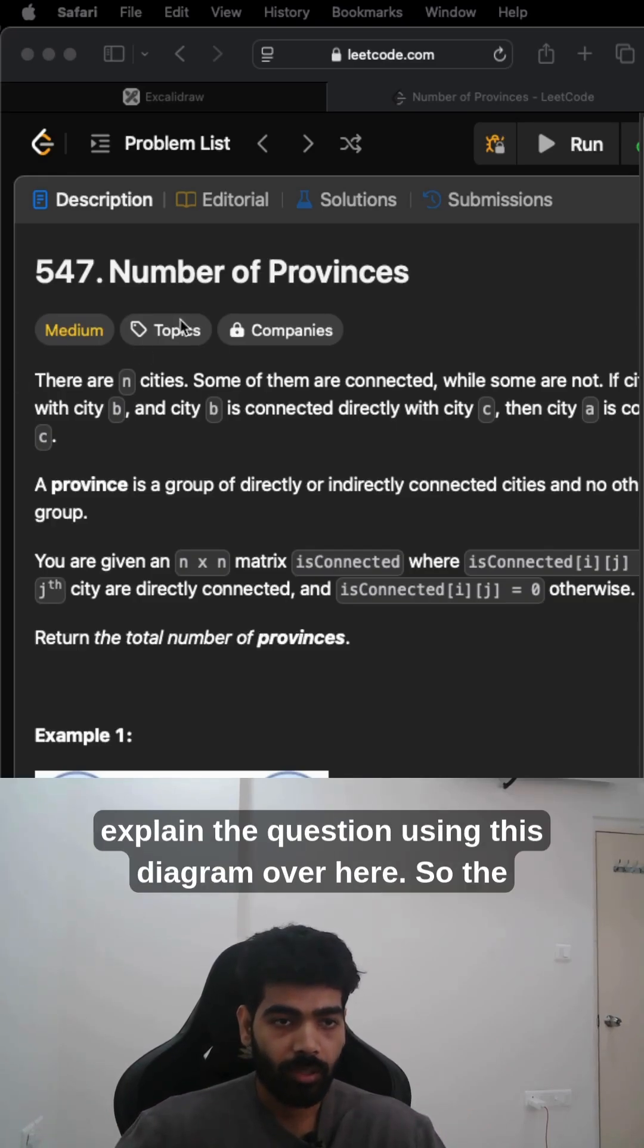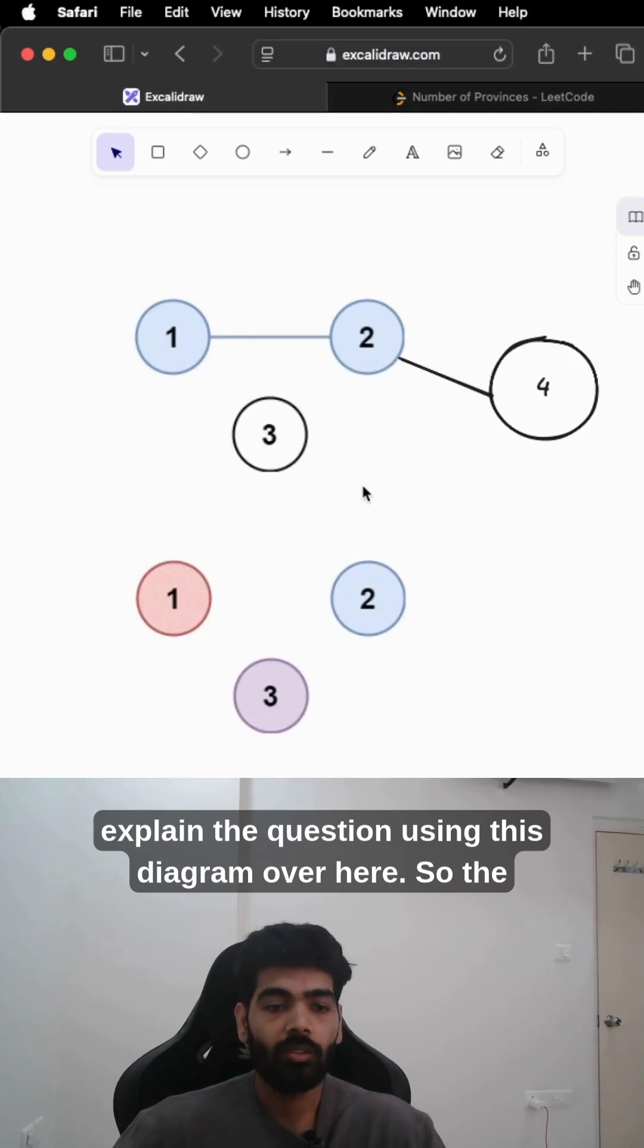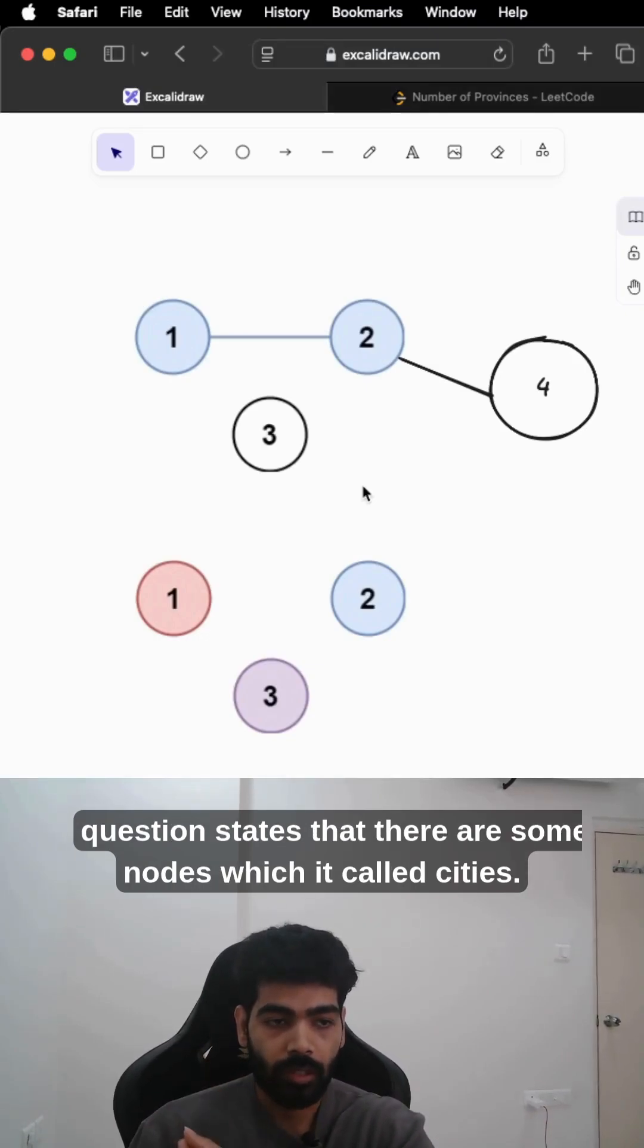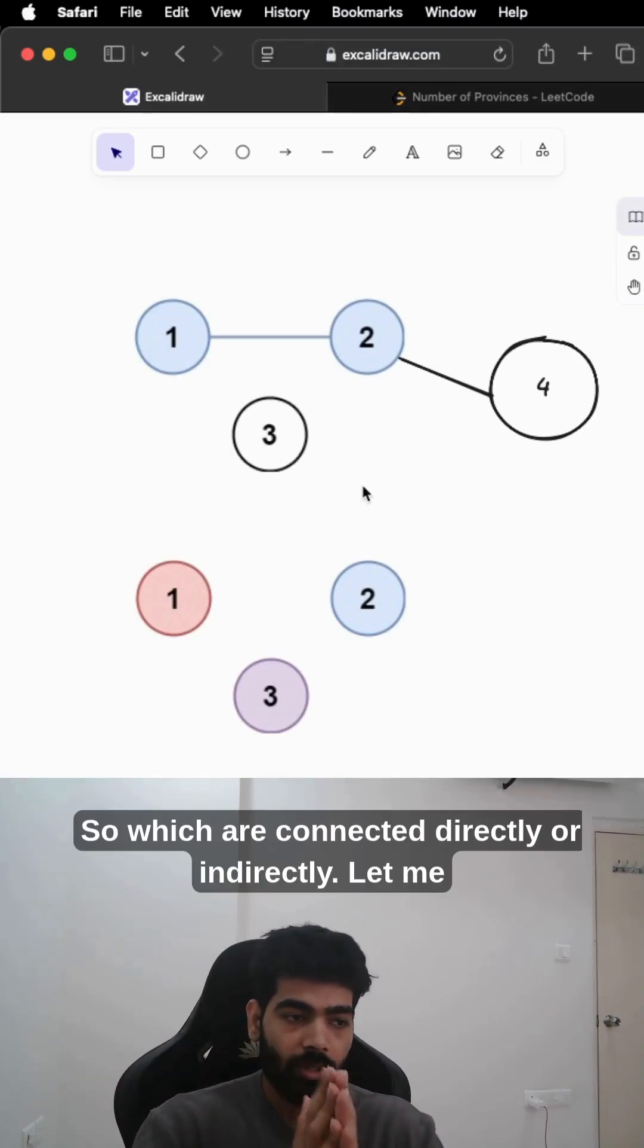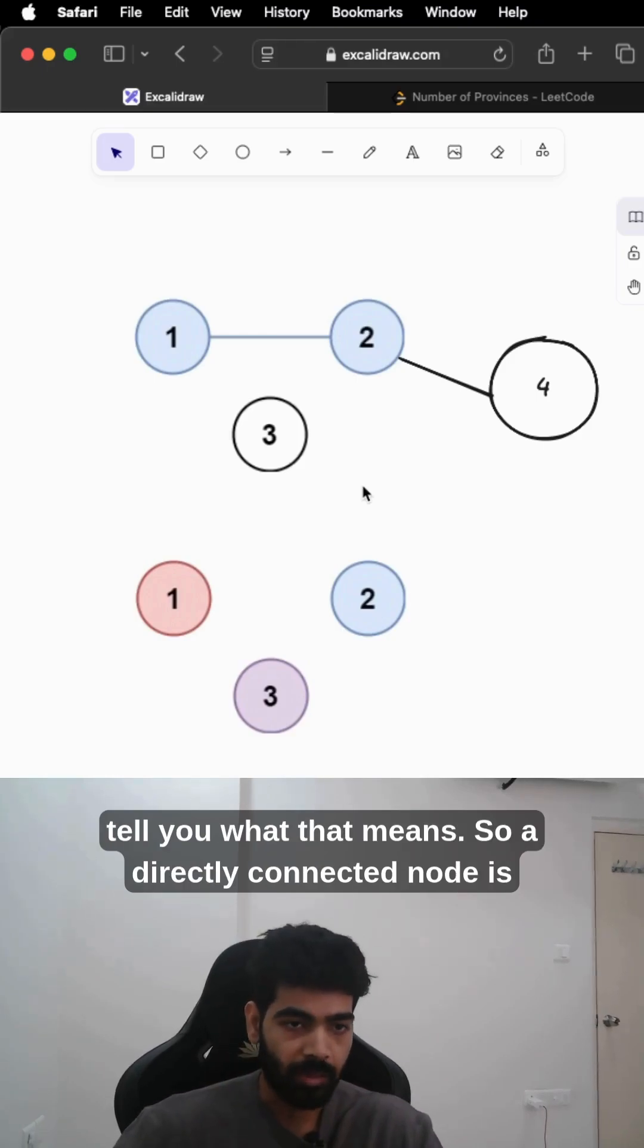I'll explain the question using this diagram. The question states that there are some nodes, which it calls cities, that are connected directly or indirectly. Let me tell you what that means.